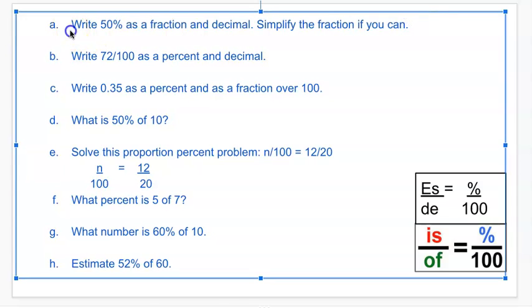So 50% as a fraction is just 50 over 100. Any percent you can write as the percent over 100, even if it's more than 100. Like 150 would be 150 over 100. That simplifies if you divide by 50 over 50, that would be one half.